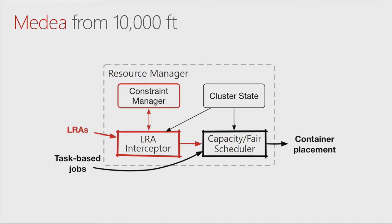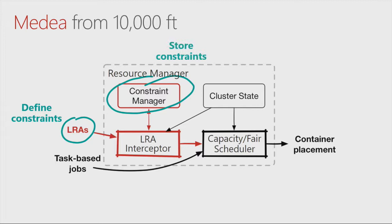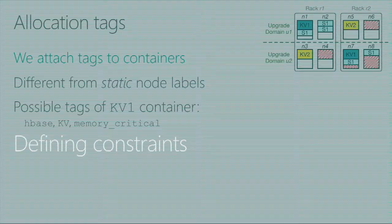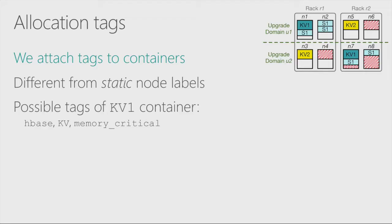Now let's turn to the design of our system. Here I show the Yarn resource manager. The new components we have added are the LRA interceptor and the constraint manager. I will first talk about how we define constraints in long-running applications, then focus on how we store these constraints in the constraint manager, and then discuss how we schedule applications with constraints. We introduced the notion of container allocation tags — attaching tags to containers — which differs from existing static node labels in Yarn.